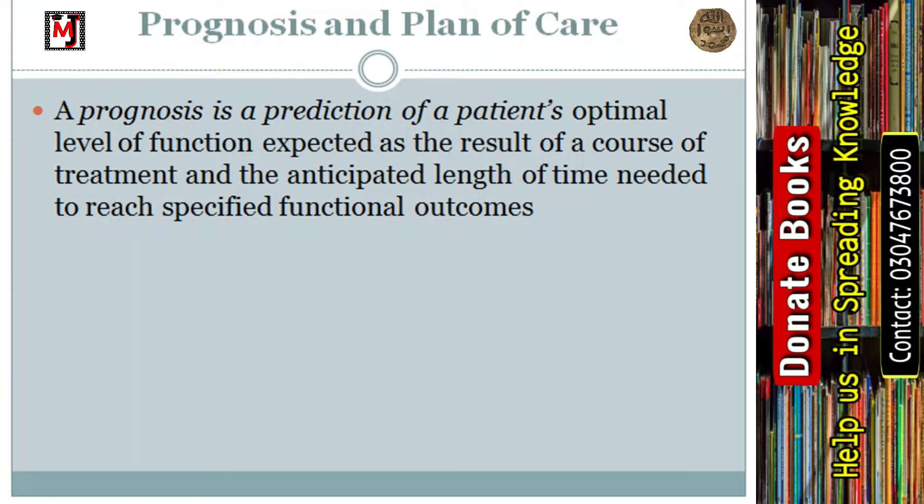If we have a healthy patient, then we can achieve the target quickly. But if a person has a very complex disease, then achieving the level of functioning takes much longer. Therefore we have to design the prognosis and plan of care accordingly.